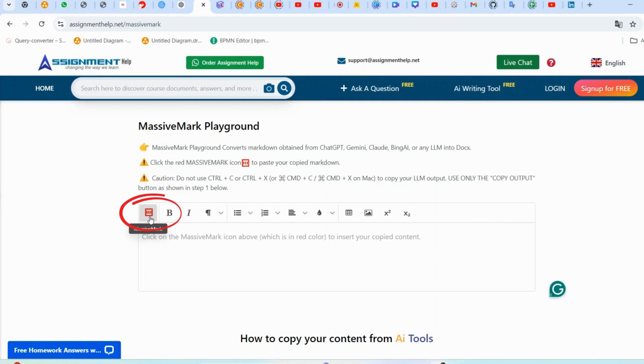Remember, avoid using CMD Plus C or CMD Plus X buttons or any other cut copy shortcuts to manually select the text. This can lead to errors. Always use the Copy Output button from ChatGPT or Gemini or your AI chatbot.